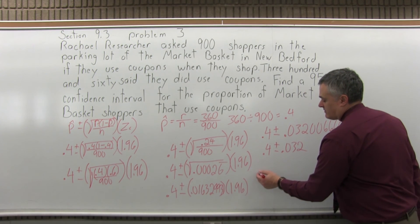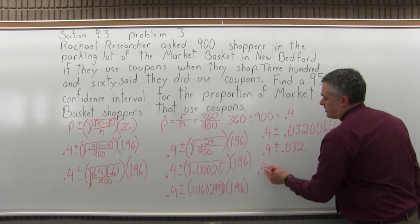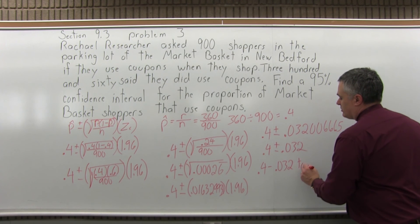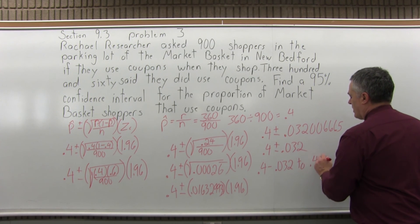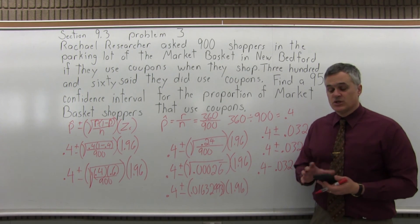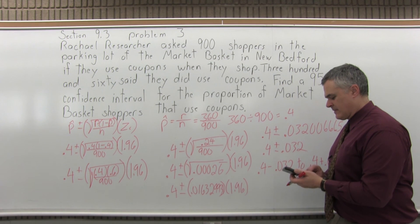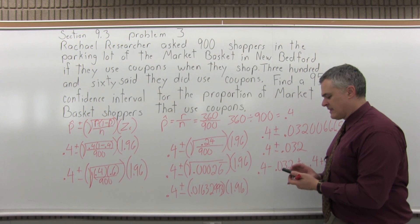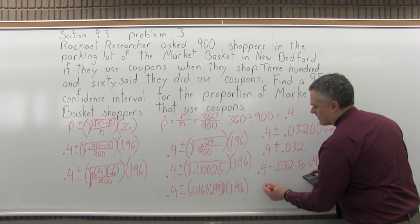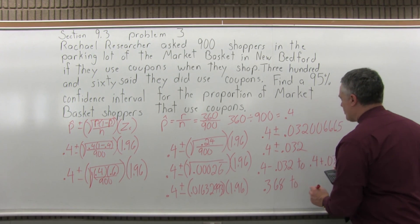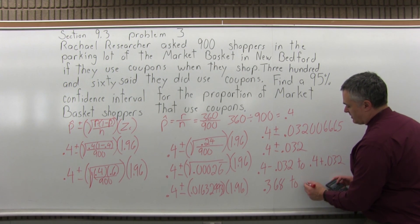So now my confidence interval will go from a low end of 0.4 minus 0.032 to 0.4 plus 0.032. So the low end of my confidence interval is 0.3682, and when I add 0.4 plus 0.032, it'll be 0.432.